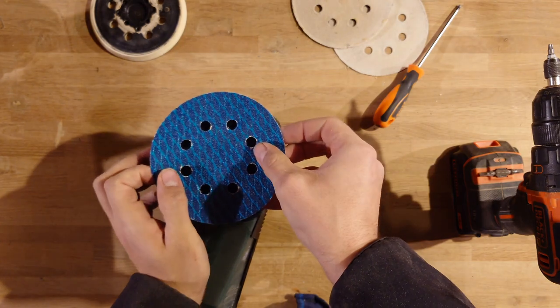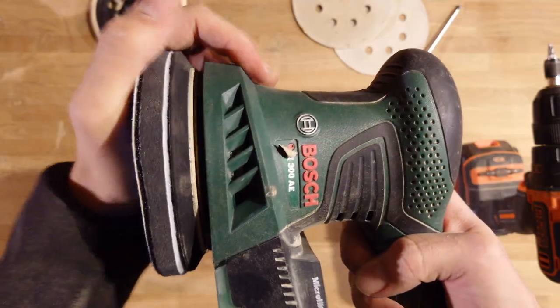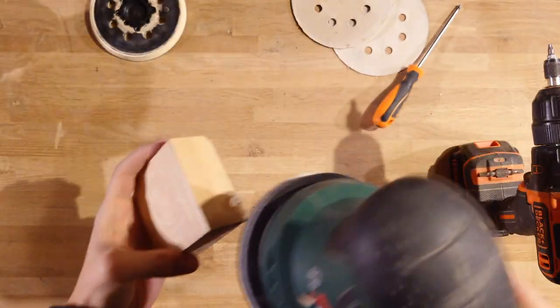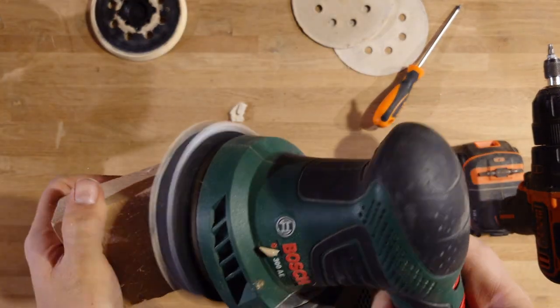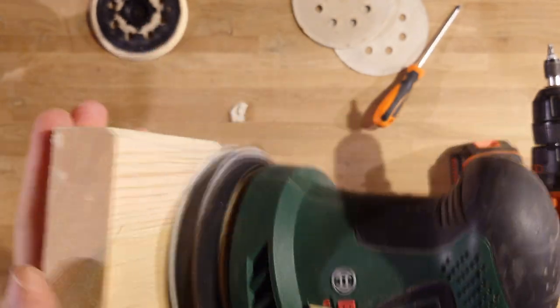First trick is this foam cushion pad that you can use when sanding. It helps with uneven surfaces, to a certain extent. It will also work as a sacrificial sanding pad, so your backing pad will last longer.